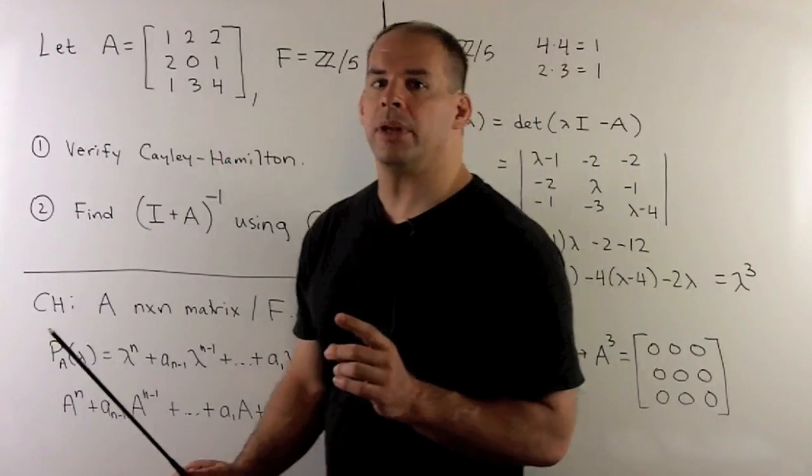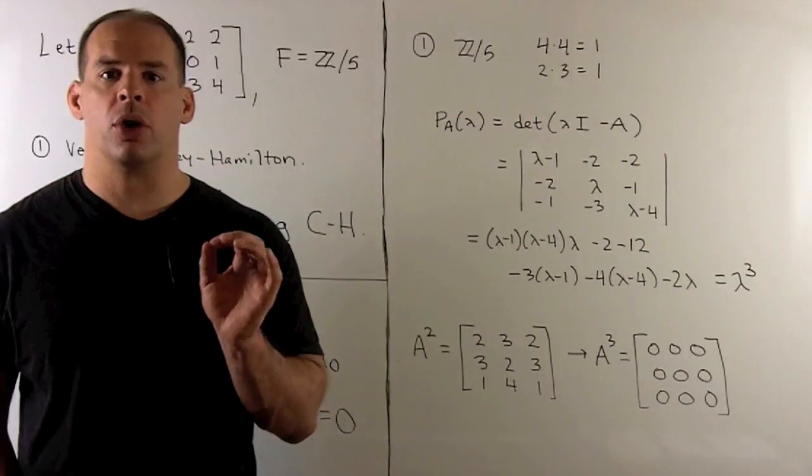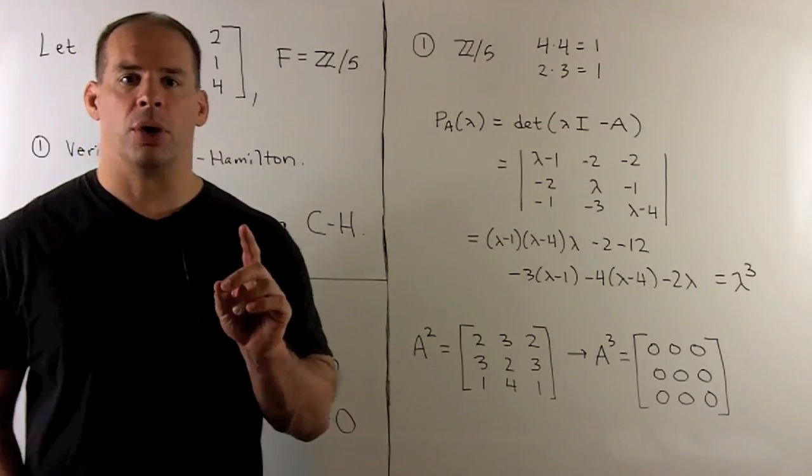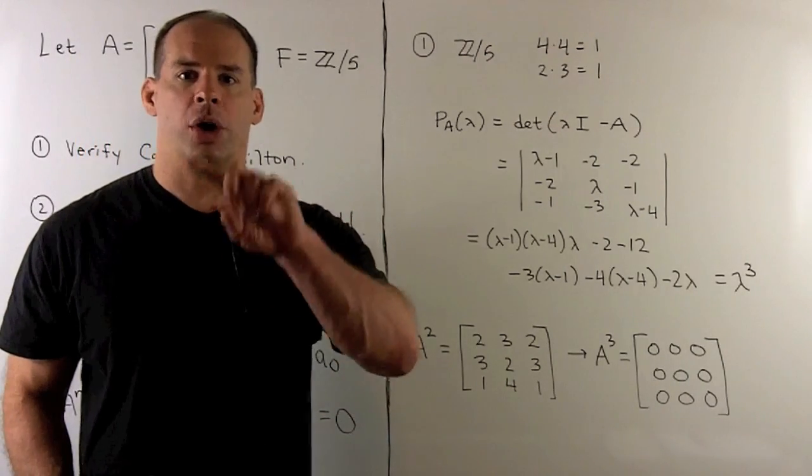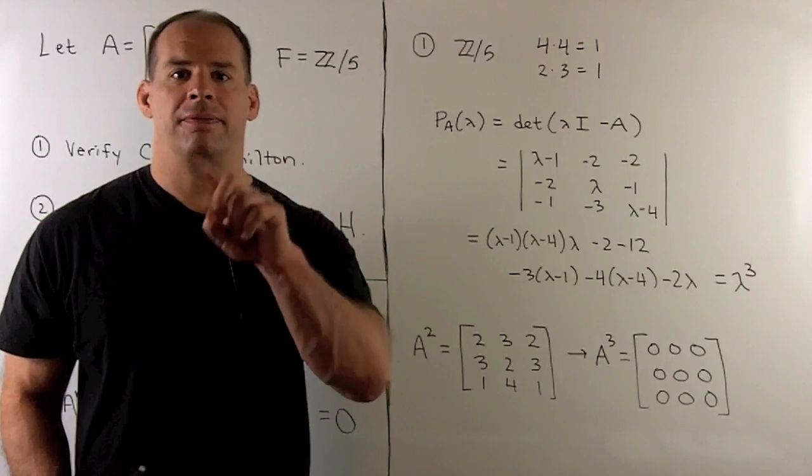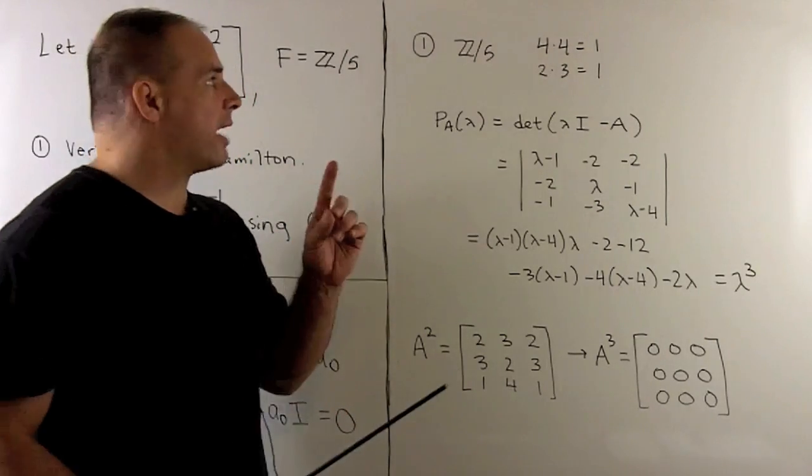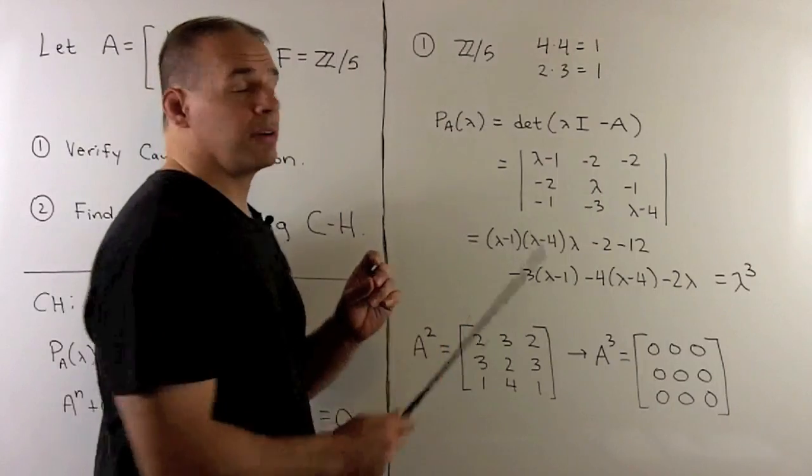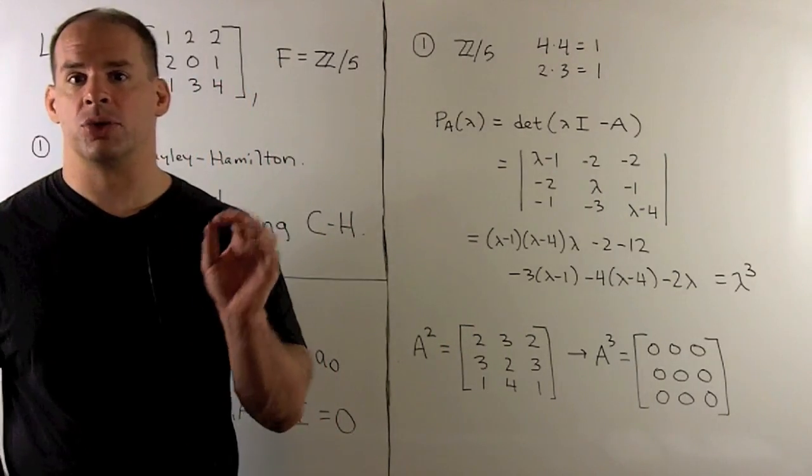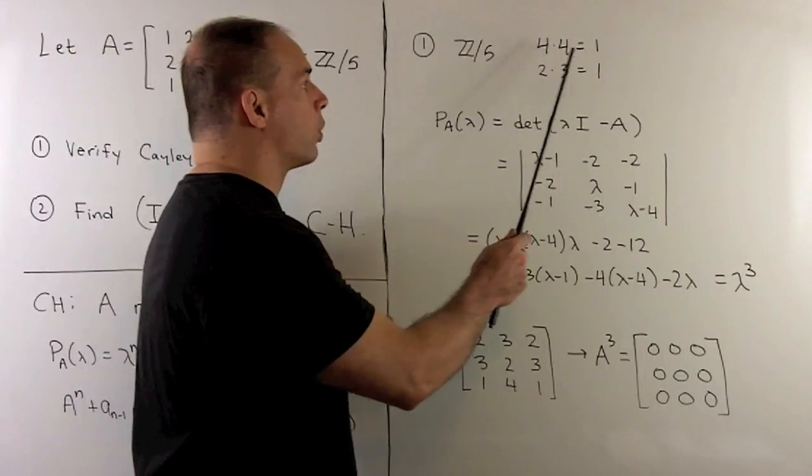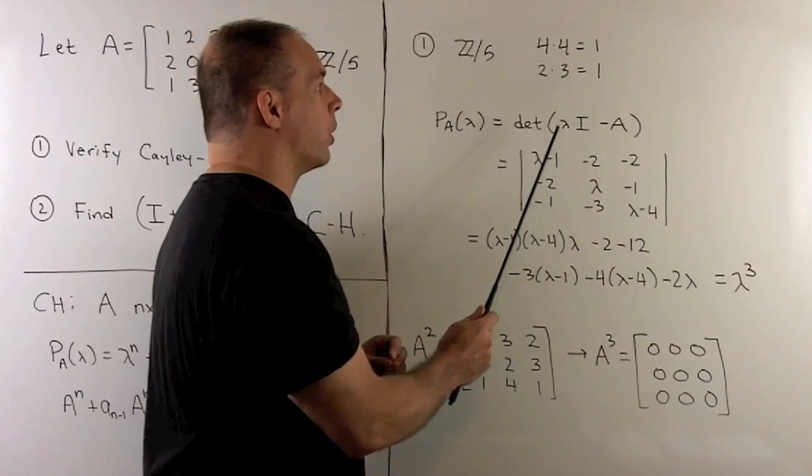In our case, we're working over the finite field Z mod 5. For addition, it's like we're working on a clock with only 5 labels. When we multiply, we'll have multiplicative inverses for the non-zero elements. It's worth noting 4 times 4 is 1, and 2 times 3 is 1.